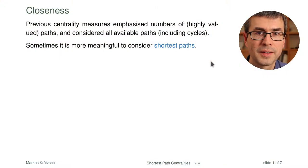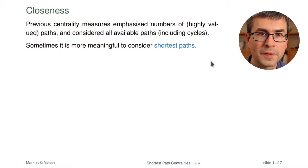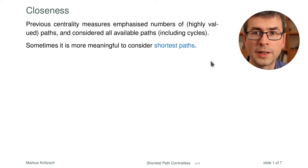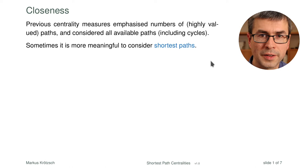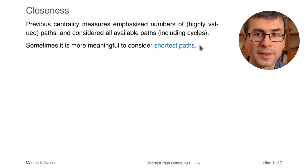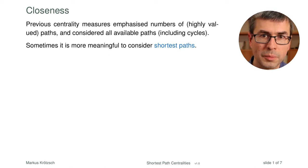So we want to have measures for importance that somehow take this into account. My name is still Markus Krutsch and these are still the videos for the Knowledge Graph course at TU Dresden. Previous centrality measures emphasized numbers of paths and considered all available paths, and sometimes it is more useful to consider the shortest paths.